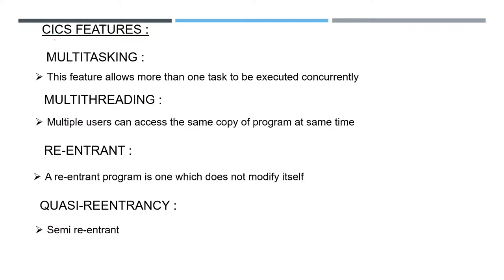To recap the key features: multitasking means two or more tasks are executed at the same time. Multi-threading means the same copy of a program can be accessed by many users at the same time — Amazon is a multi-threading program, as many users concurrently access and do shopping on it.